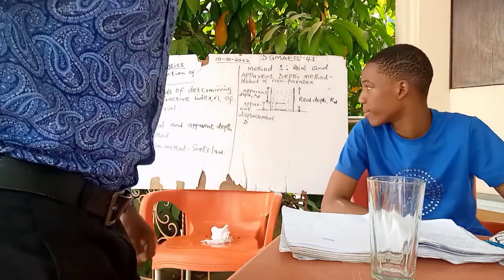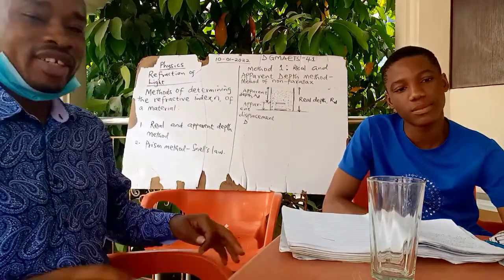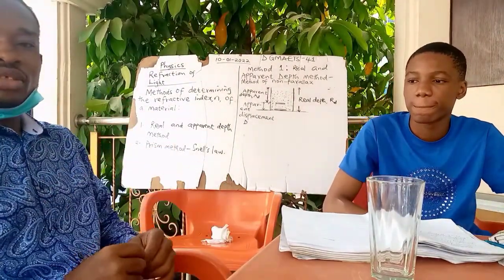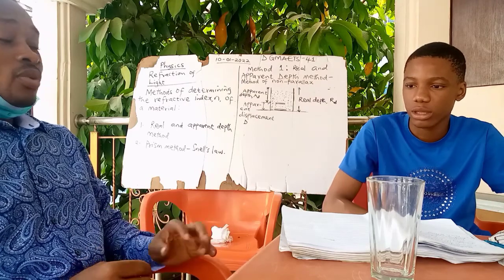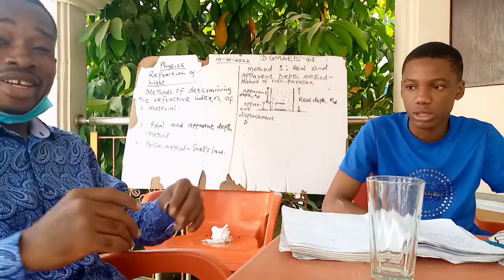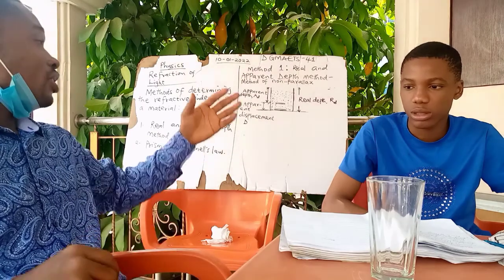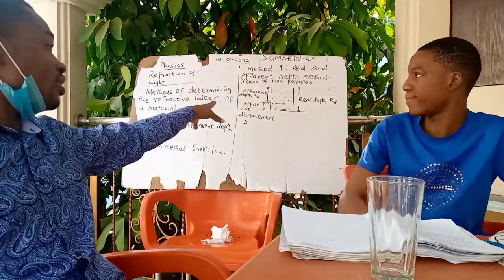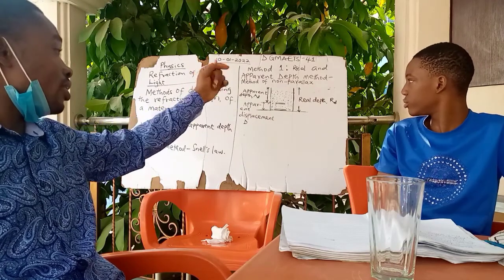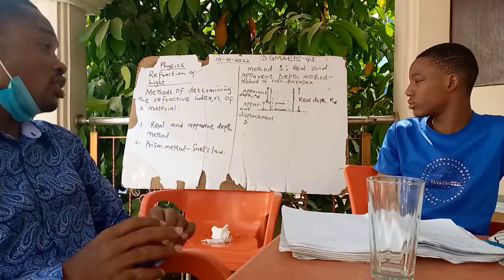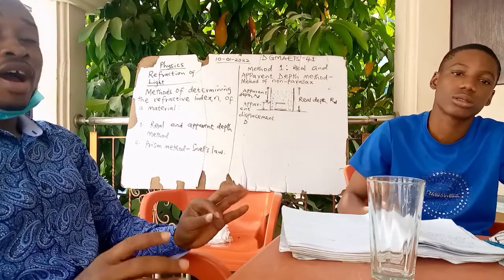Now we are going to see how we determine the refractive index of any substance that can cause refraction. We are going to demonstrate the experiment live. On the board here there are two methods we're going to look at, but the first method is the real and apparent depth method. We also call it the method of non-parallax.